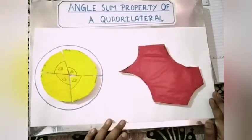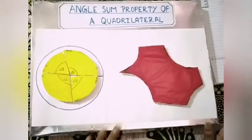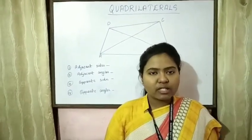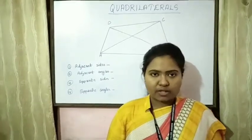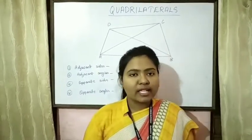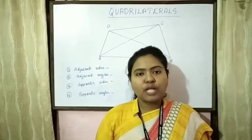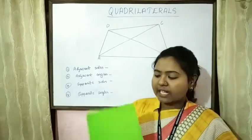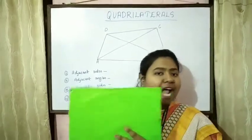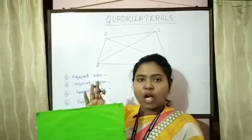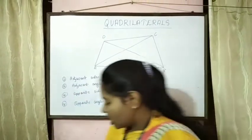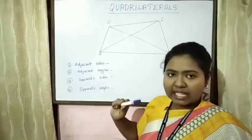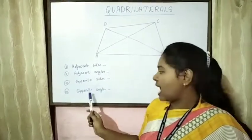So students, the sum of all angles of a quadrilateral is 360 degrees. Now we will study in detail about quadrilaterals. A quadrilateral is a four-sided, two-dimensional, closed figure which has four vertices, four sides, and four angles.